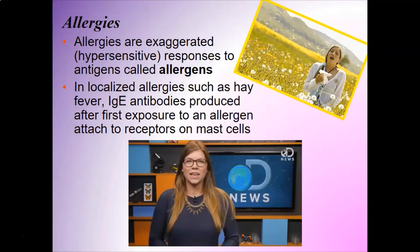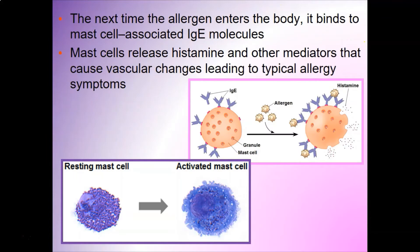I feel very lucky I don't have to deal with that. These IgE antibodies produced on the first exposure attach to mast cells, and then the next time the allergen enters the body, it binds to the mast cell-associated IgE molecules. These immunoglobulin class E molecules cause the mast cells to degranulate, releasing histamine and other mediators that cause vascular changes, leading to your allergy symptoms.